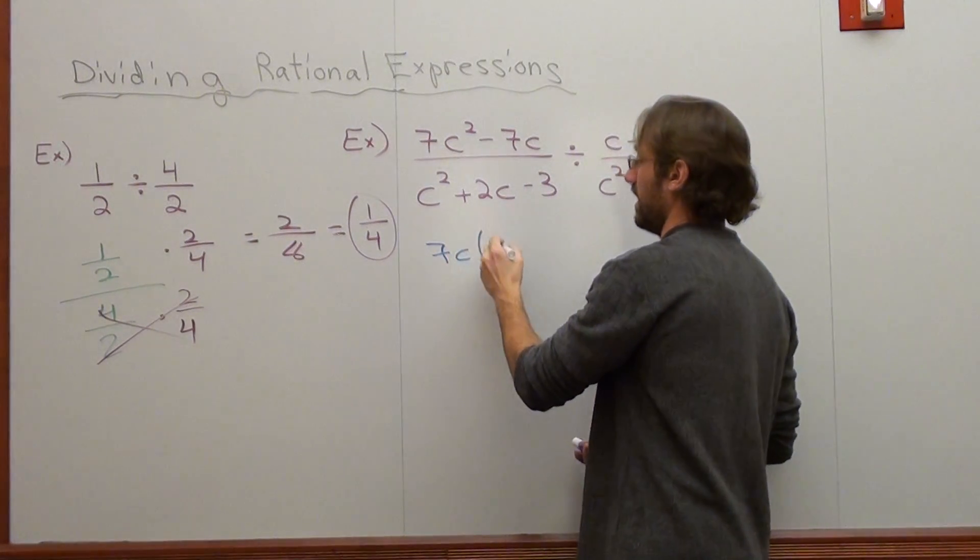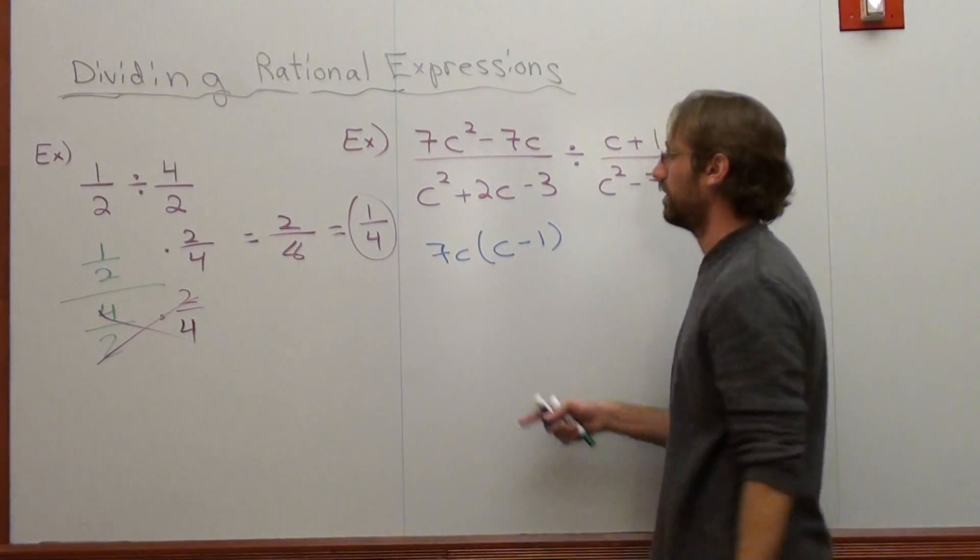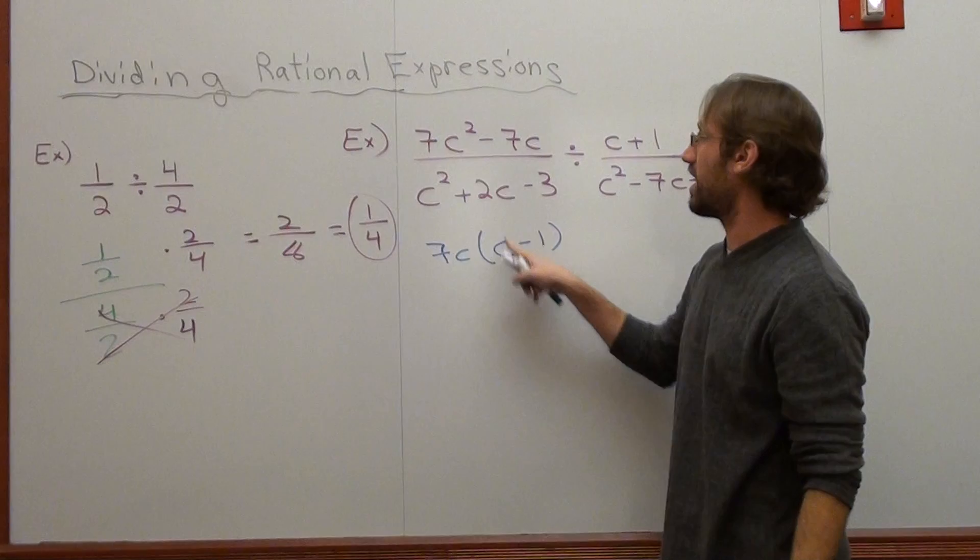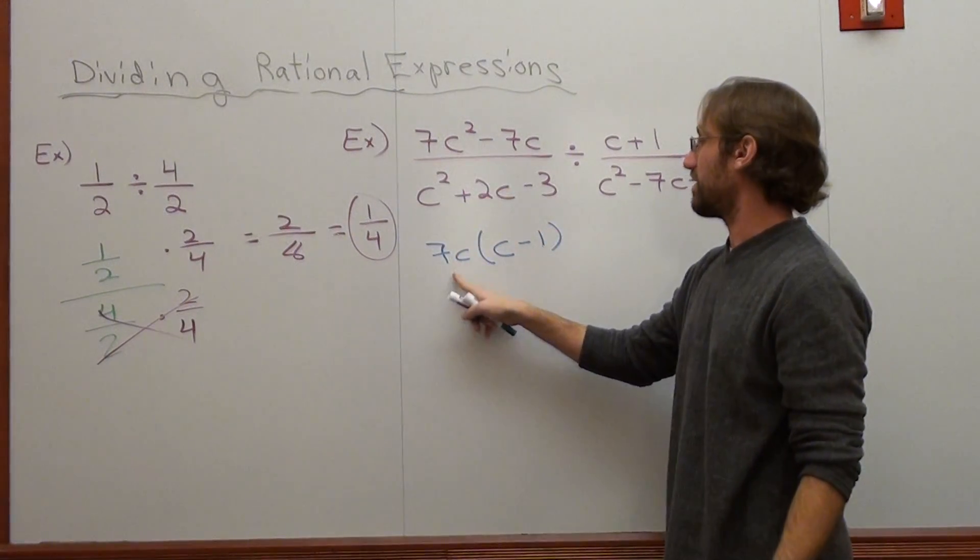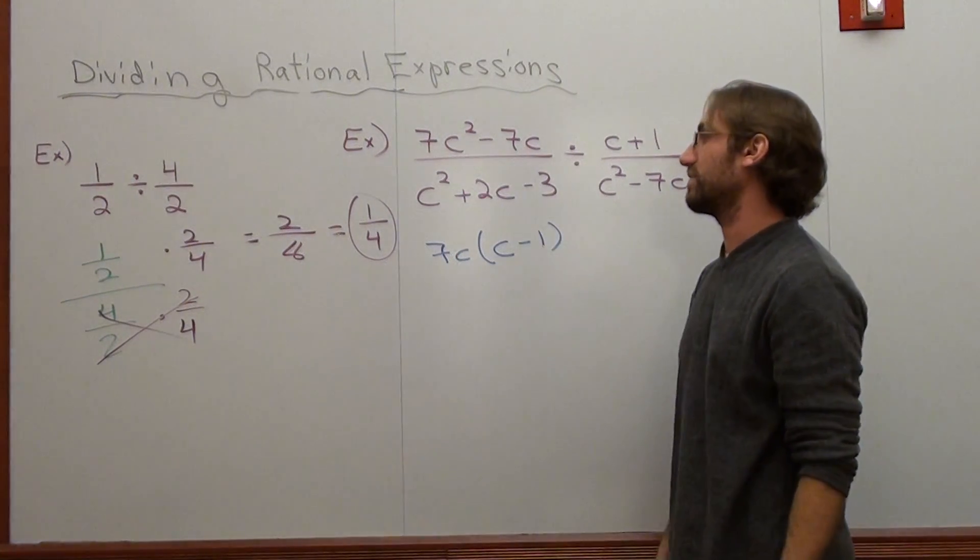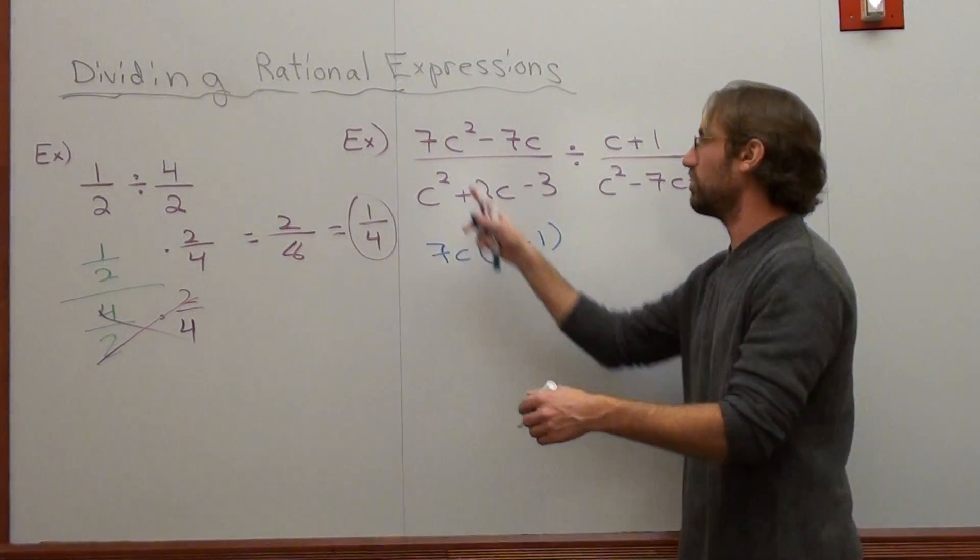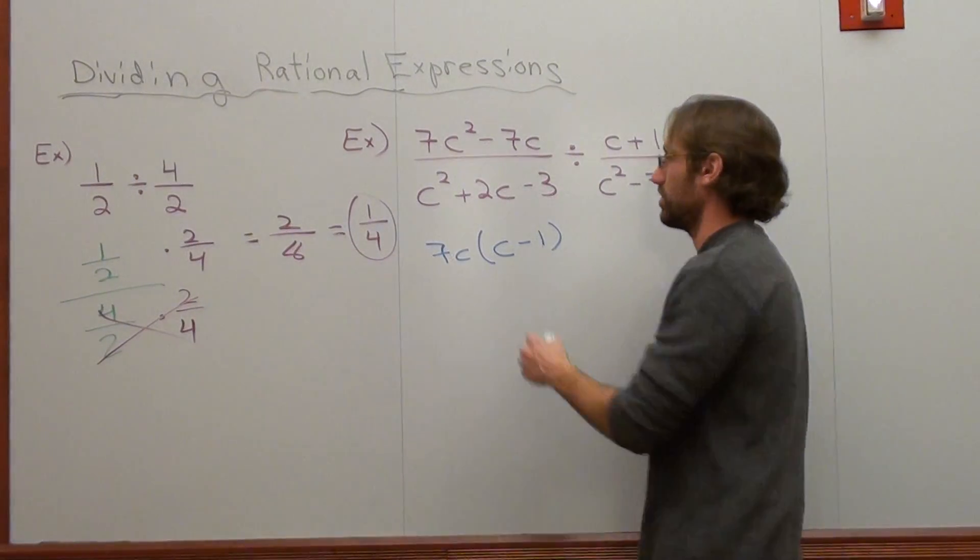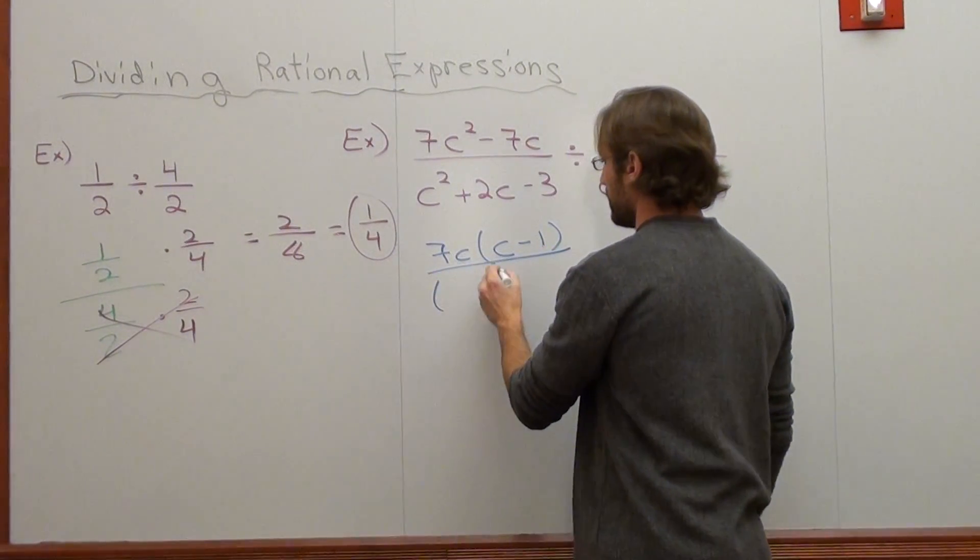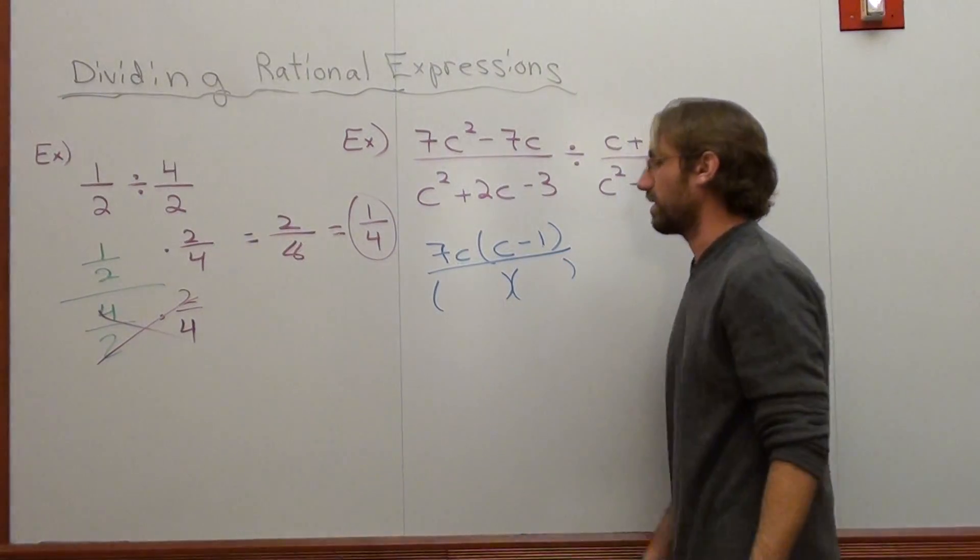Now, when I do that, I have c subtract 1 left over. Check it. 7c times c is 7c². 7c times negative 1 is negative 7c. It's basically what can you divide every term by when you're doing GCF. This foils, I'm sorry, not foils, factors into two binomials.